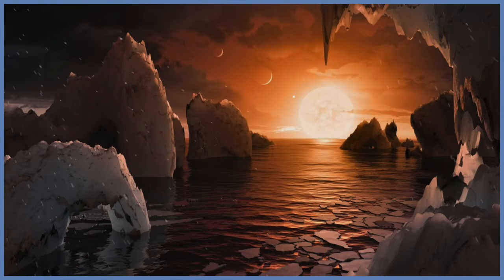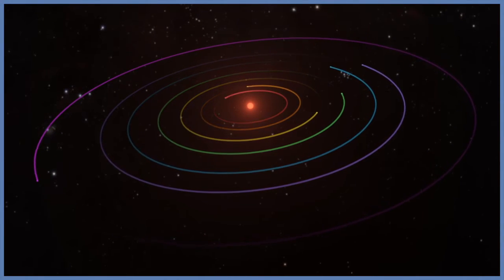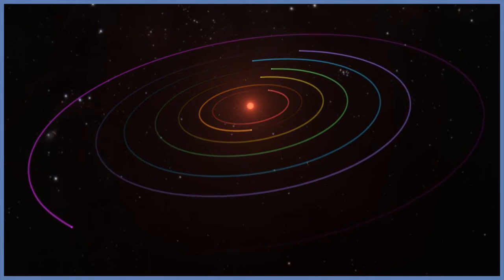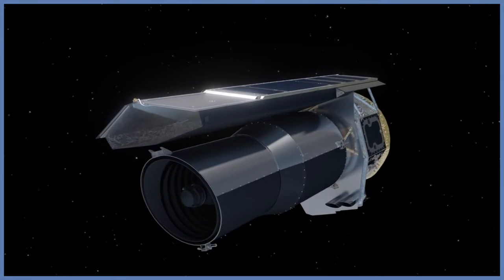A NASA telescope has revealed a large batch of Earth-sized habitable zone planets around just a single star. The Spitzer Space Telescope has revealed the first known system with seven Earth-sized planets around this star.